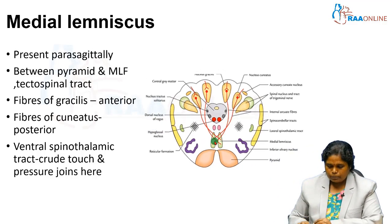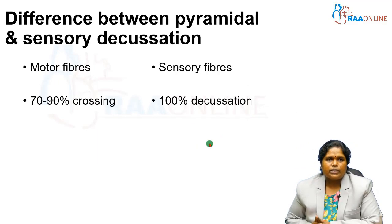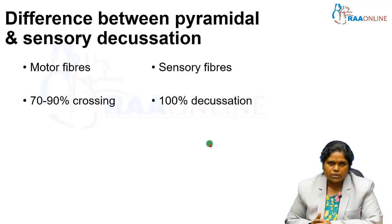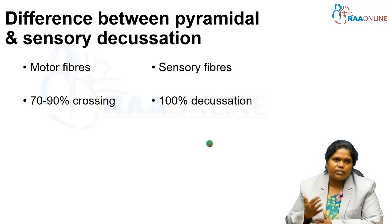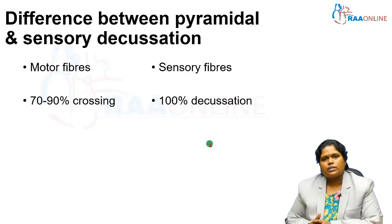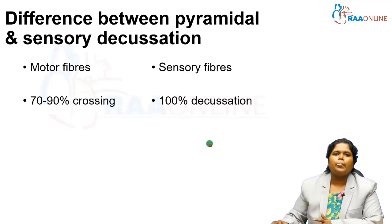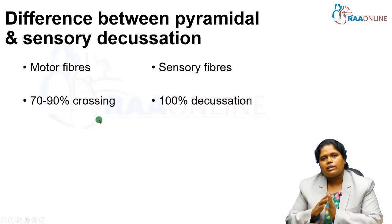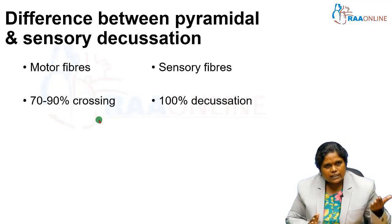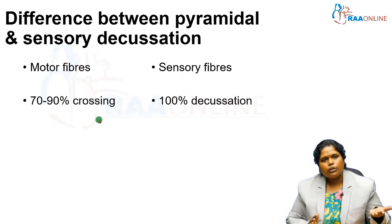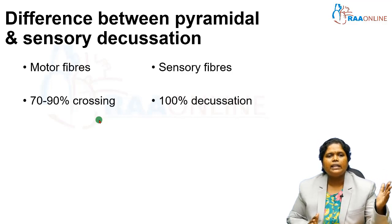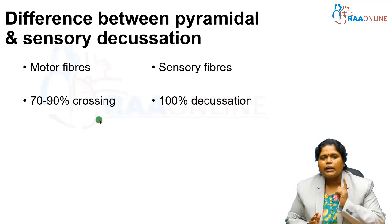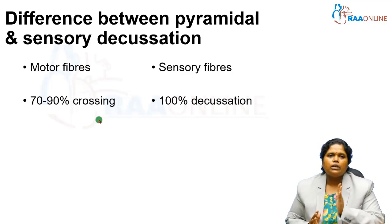The difference between pyramidal decussation and sensory decussation: pyramidal decussation involves corticospinal (motor) fibers, with 70–90% crossing to become the lateral corticospinal tract and 10–30% remaining as the anterior corticospinal tract. Sensory decussation involves ascending second-order neurons arising from the nucleus gracilis and cuneatus. The key difference is that sensory decussation is 100% complete — all fibers cross to the opposite side.